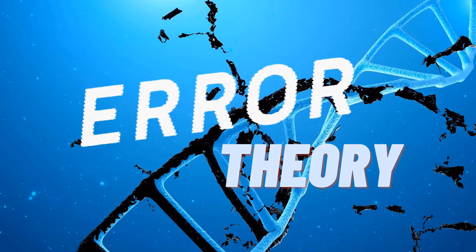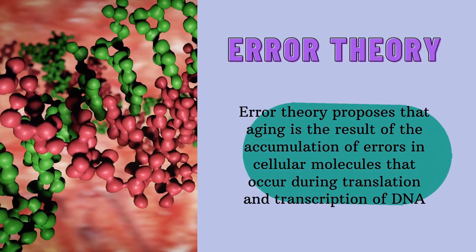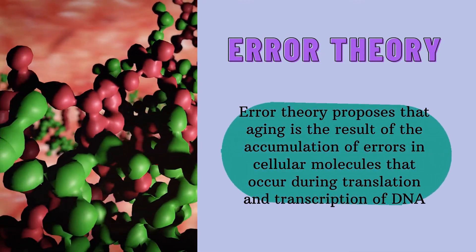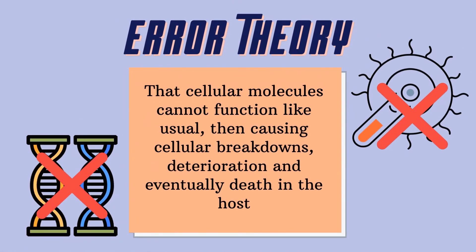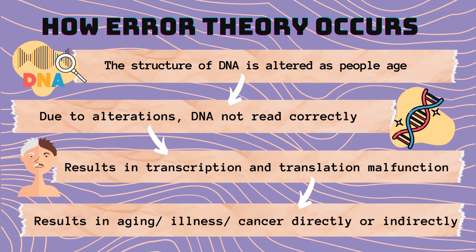Next, we move on to error theory. It proposes that aging is the result of accumulation of errors in cellular molecules that occur during translation and transcription of DNA in the human body. As these errors occur in the process of protein synthesis, the cellular molecules involved cannot function as usual, causing cellular breakdowns, deterioration, and eventually death. It occurs when the structure of DNA is altered as people age, and due to these alterations, the DNA cannot be read correctly, resulting in malfunction of transcription and translation, which might lead to aging, illness, or cancer directly or indirectly.